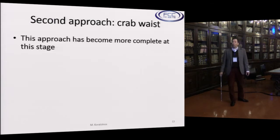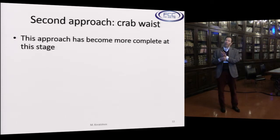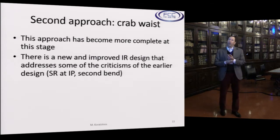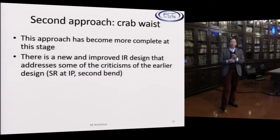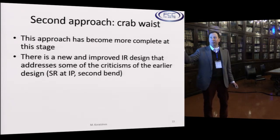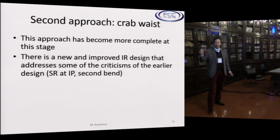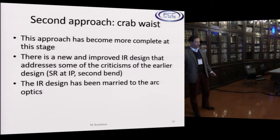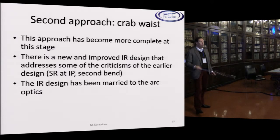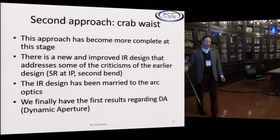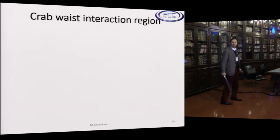Let me go to the second crab waist approach. This approach is now more complete than the CERN approach because more manpower has gone into it. There is a new and improved IR design that addresses some of the criticism of the earlier design, such as synchrotron radiation shining at the interaction region and the fact that there were two bends there. These have been addressed. Also, this IR design has now been married to the arc optics, so we can close the ring and run particles in a computer that go around the ring. We have the first results regarding dynamic aperture, which is something new.